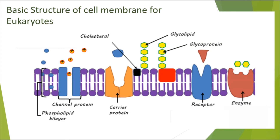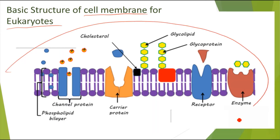You're required to know the basic structure of the cell membrane for eukaryotes. This includes the cell surface membrane which surrounds the cell, as well as the cell membrane which surrounds the organelles — for example, for the chloroplast. So this is the basic structure and we'll be going through all of these different components in more detail now.